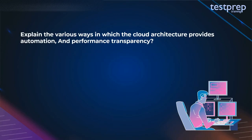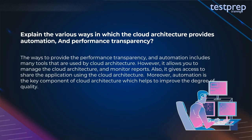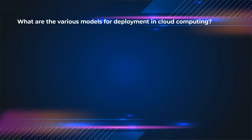Question 17: Explain the various ways cloud architecture provides automation and performance transparency. Cloud architecture uses many tools to provide performance transparency and automation. It allows you to manage the cloud architecture and monitor reports. It also gives access to share applications using cloud architecture. Moreover, automation is a key component of cloud architecture that helps improve the degree of quality.